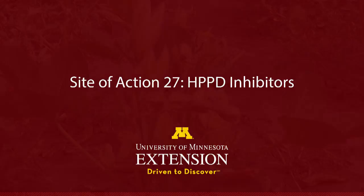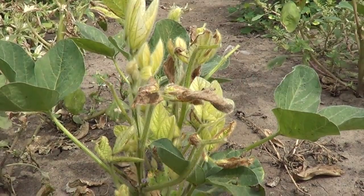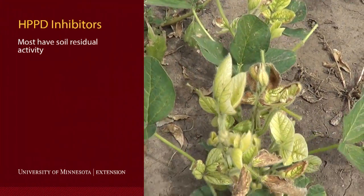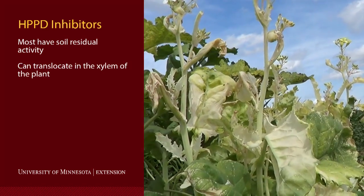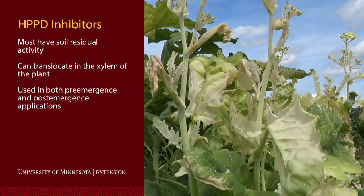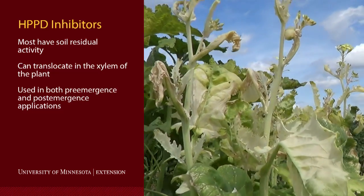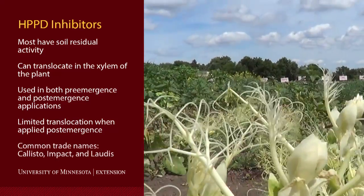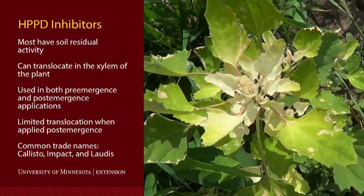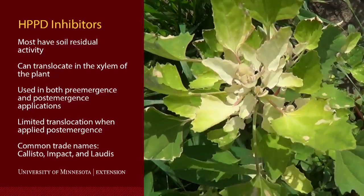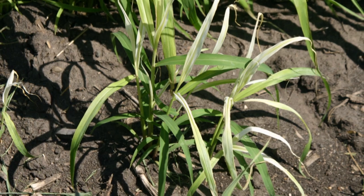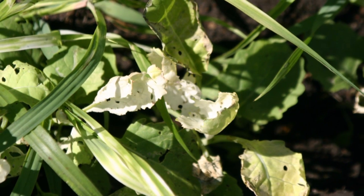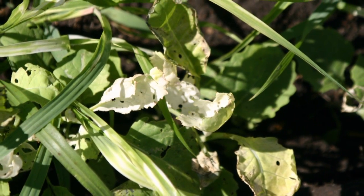Site of action 27 herbicides inhibit plant pigment formation. These herbicides inhibit a specific biochemical site referred to as HPPD, which is essential in the production of plant pigments that protect chlorophyll from being destroyed by sunlight. This results in injury symptoms of white, yellow, or necrotic leaf tissue on both grass and broadleaf weeds.